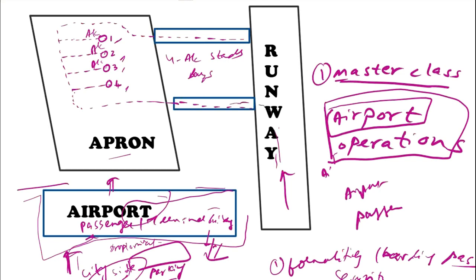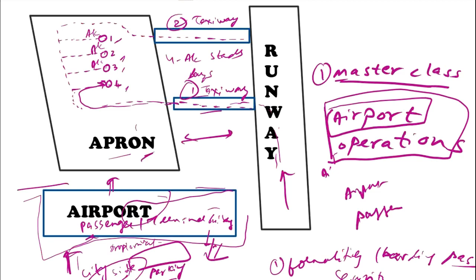The aircraft uses these ways to connect to the apron and then goes to the corresponding stand. There is one road connecting the apron and the runway — this is known as the taxiway. In the diagram we have one taxiway and then a second taxiway. So the taxiway is basically the road connecting the apron and the runway.